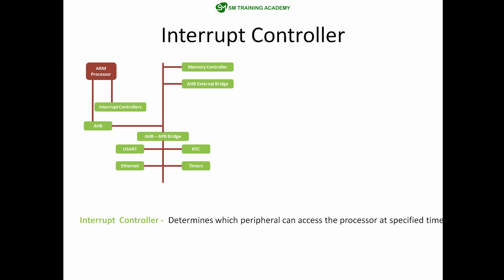Next is the interrupt controller, a very important hardware component in ARM processor-based microcontrollers. It determines which peripheral can access the processor at a specified time, providing authority to peripherals based on priority. The interrupt controller executes instructions based on the priority of the peripherals requesting access to the ARM processor.